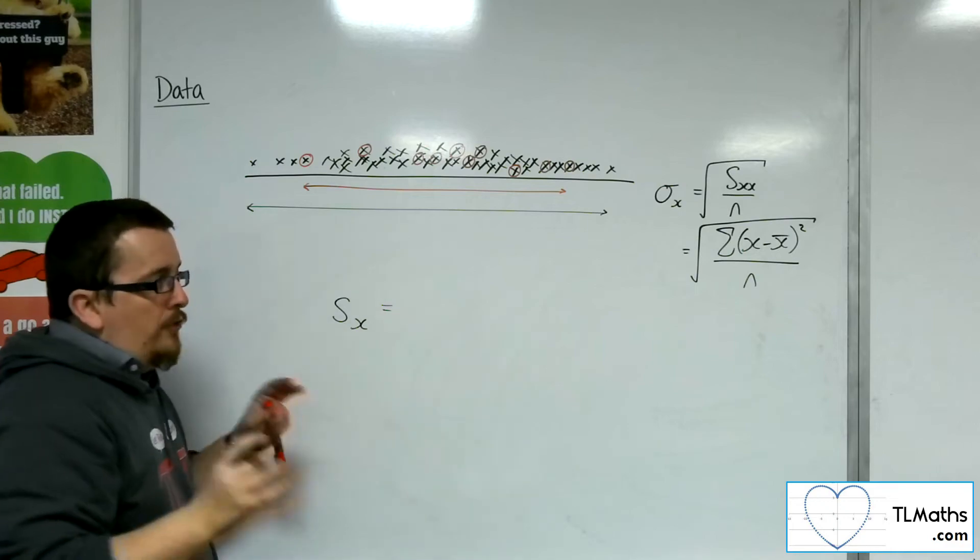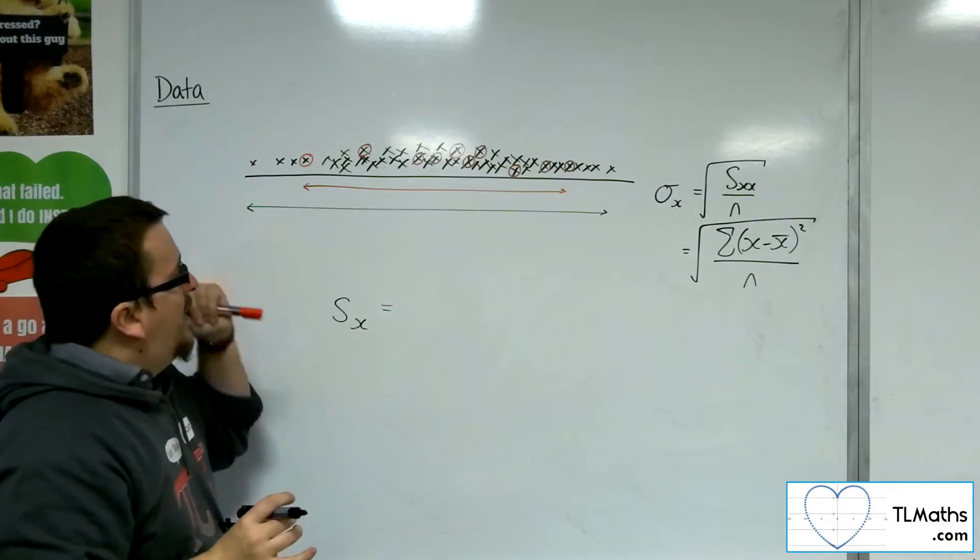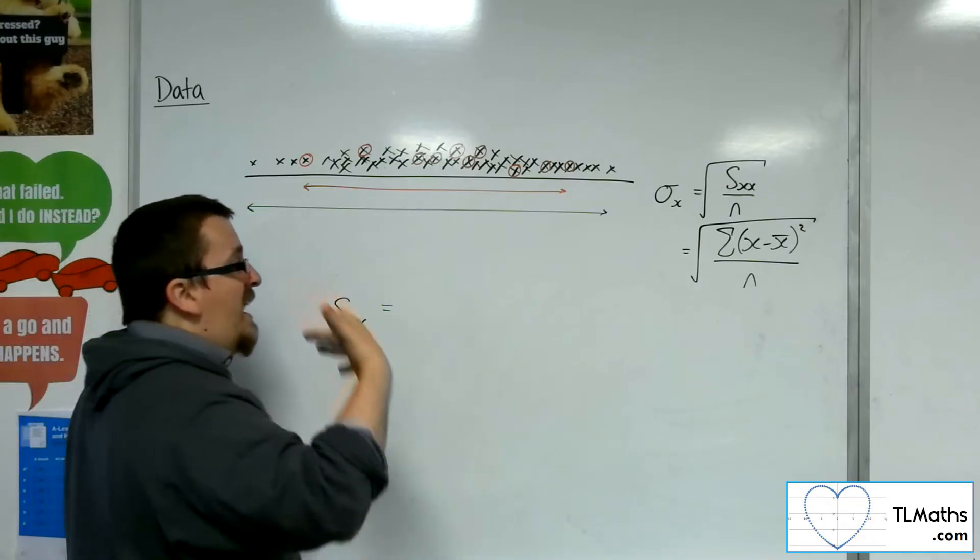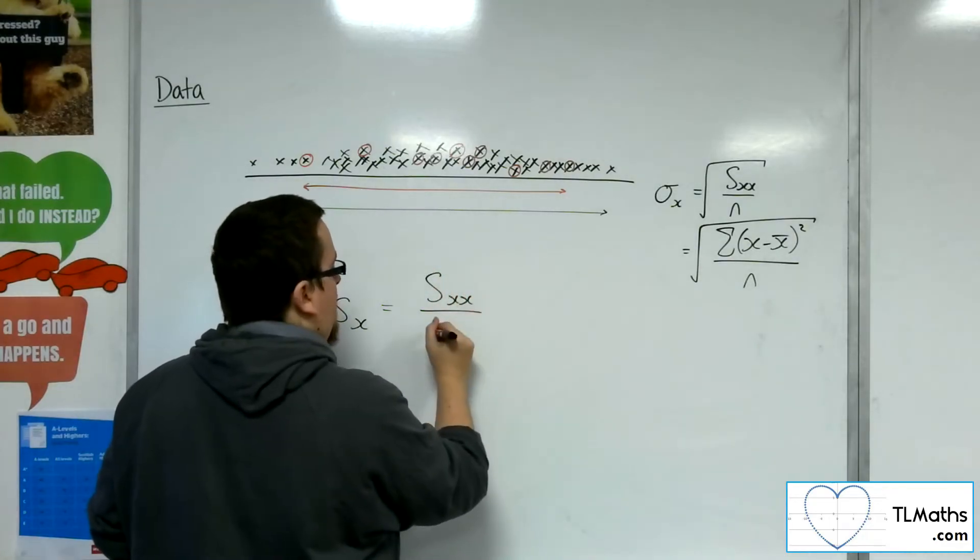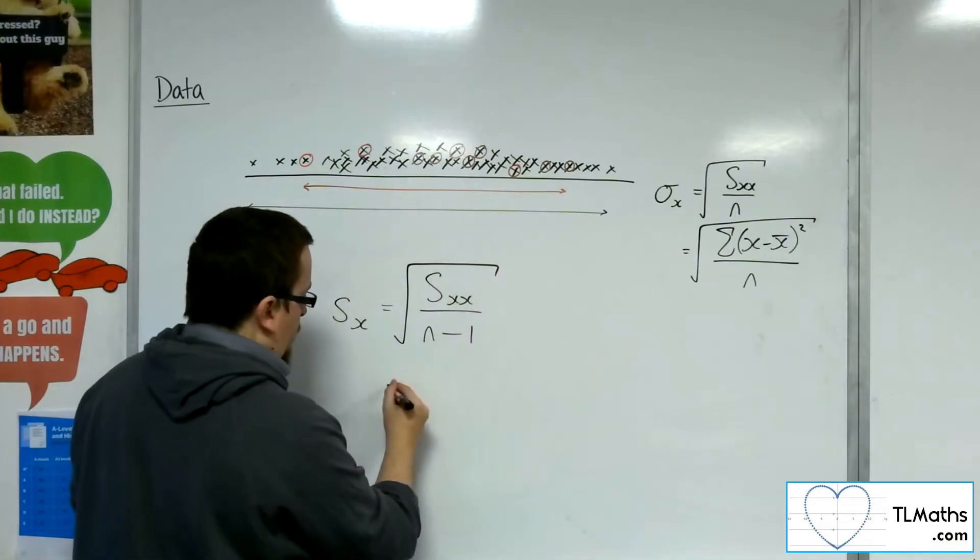And to counteract the fact that the population one will be larger than the sample, instead of dividing by n, we divide the sxx by n minus 1 and square root it.